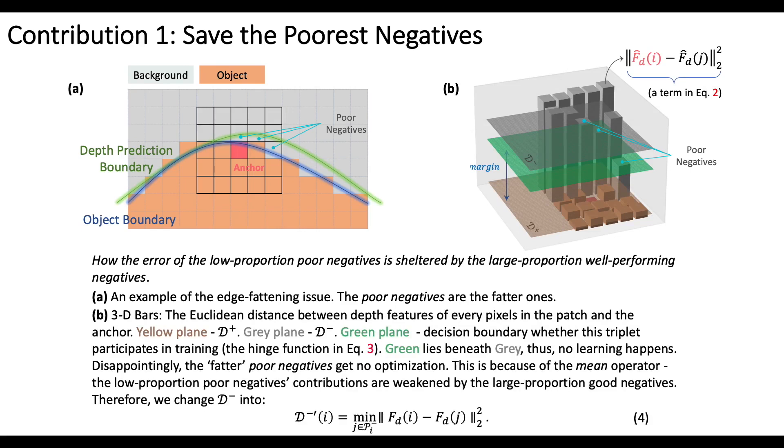In B, only if the green plane lies above the gray can this triplet participate in optimization. Thus, here, no optimization happens. This is because of the average operator. The low proportion poor negatives contributions are weakened by the large proportion good negatives.